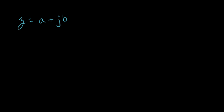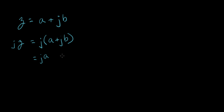So now what I want to do is, what happens if we multiply Z by J one time? J times Z equals J times A plus J times B. Let's just multiply it through: equals J times A plus J times J times B. A and B have now switched places, so we put J·A on this side, and J times J is minus one, so we have minus B plus J·A.